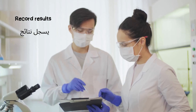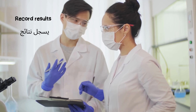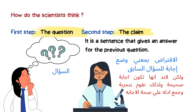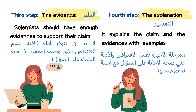Now we want to know how scientists think. First, there is a question — scientists start to think about how to answer this question. So the scientist puts a claim. The meaning of claim is a sentence that gives an answer for this question. So we have: step one — a question; step two — the claim. Then the third step: we need evidence for this answer. Scientists should have enough evidence to support their claim — to support that their answer is correct.